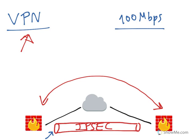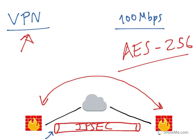You want to make sure you read the performance figures for VPN carefully. You also want to look at the encryption algorithm the vendor is advertising for a particular performance. In most situations we use AES-256, so you want to make sure that for AES-256 you actually have the desired VPN performance.